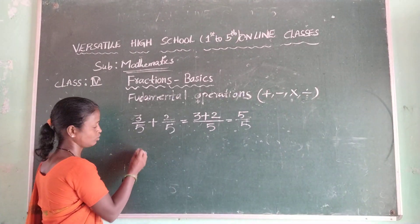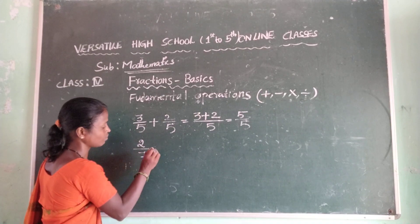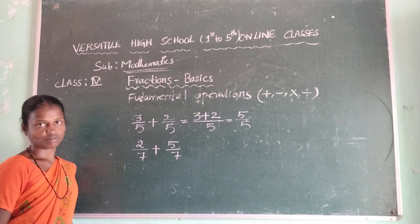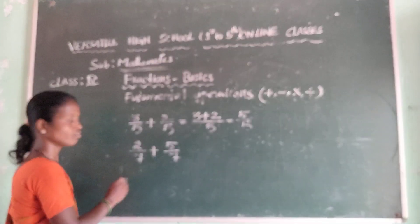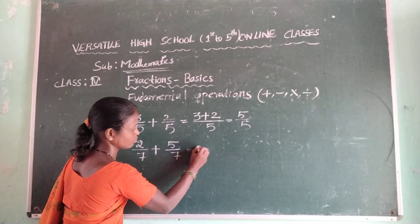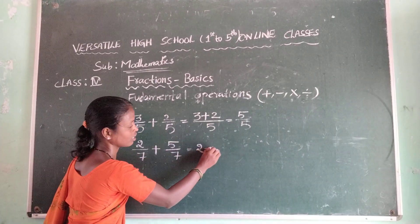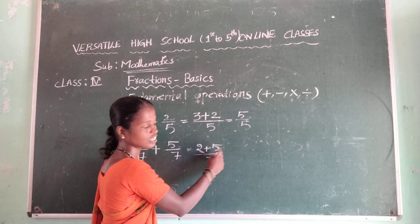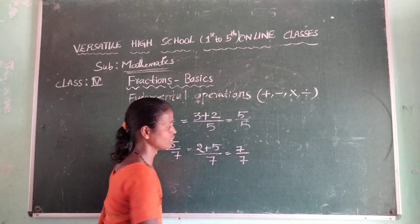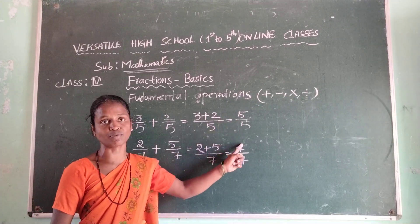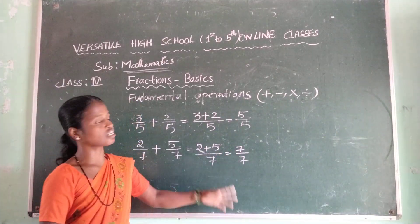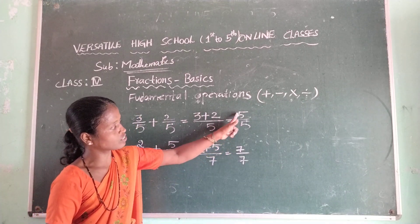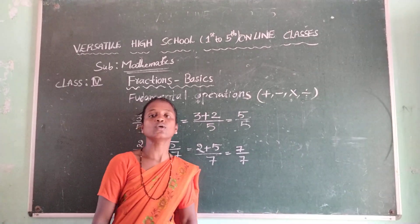Another example: two by seven plus five by seven. What is the numerator? Two, and here the numerator is five. So two plus five by seven equals seven by seven. Observe that numerator and denominator are the same — so the result seven by seven is also called a unit fraction.